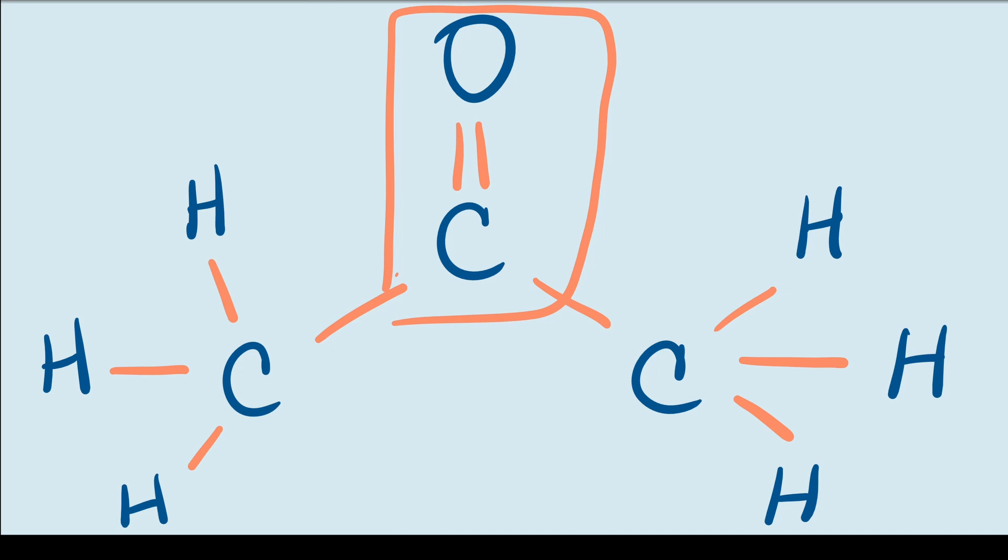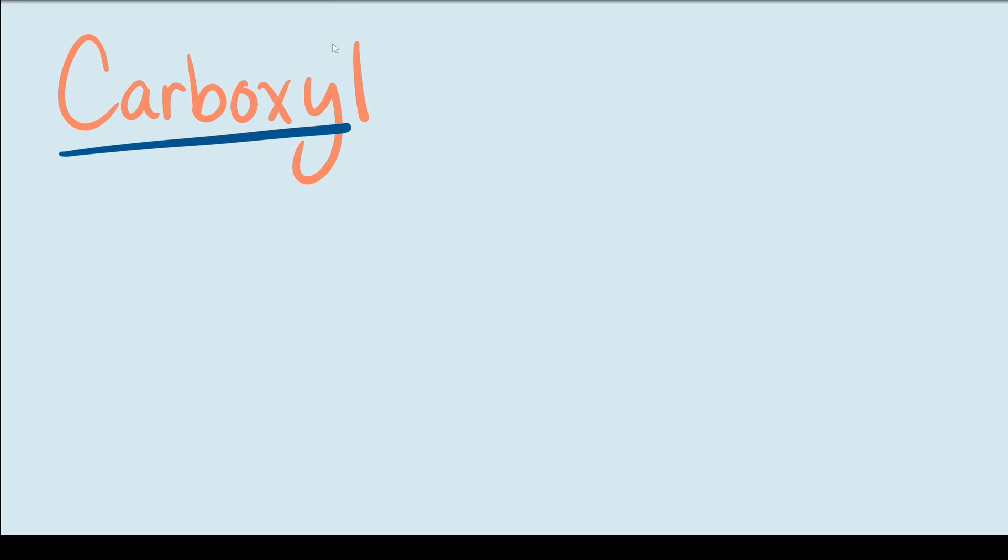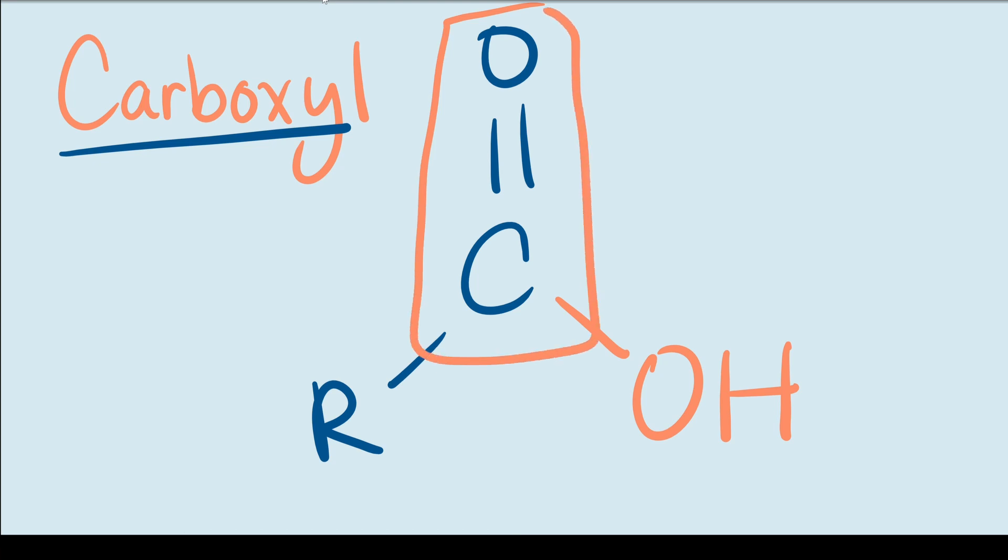Now let's move on to the carboxyl group. Carboxyl sounds very similar to carbonyl, and that's because it's built from the carbonyl group itself. Let's start by drawing a carbonyl group, except we'll take one of the R groups and we'll replace that. So we'll take that out and we'll replace it with an OH group, which is also a hydroxyl group. Now I've already talked about the hydroxyl group in a previous video, so make sure to check that out if you haven't already. The carboxyl group is basically a combination of the carbonyl and hydroxyl groups. When you put them together, you get a carboxyl group and it kind of sounds like that too.